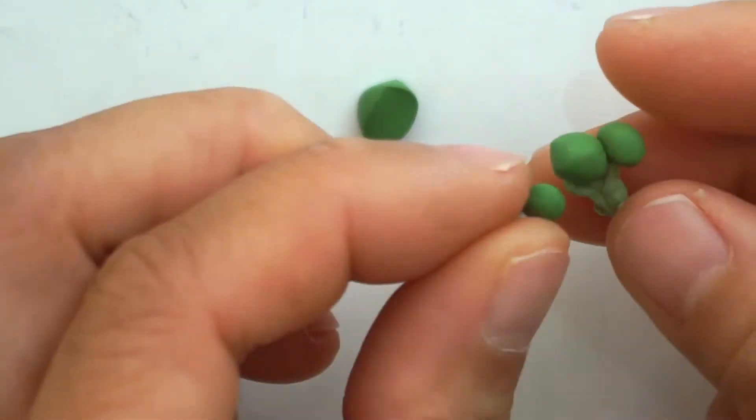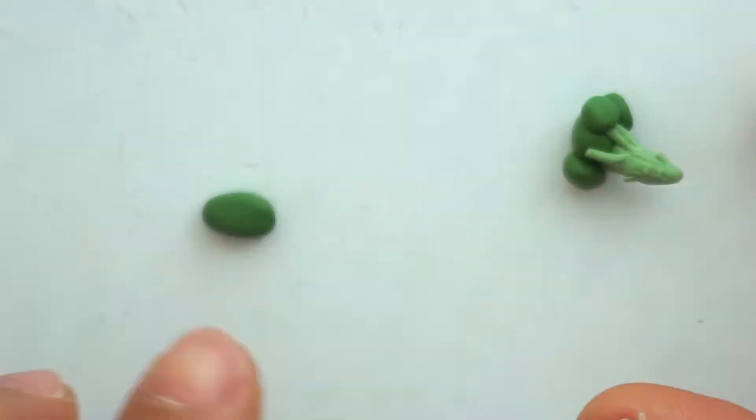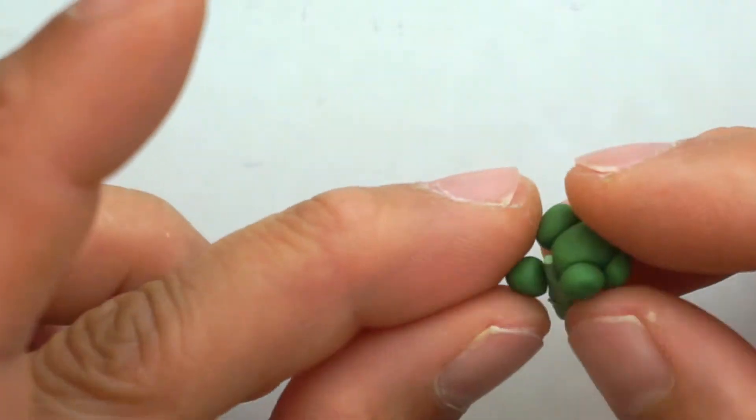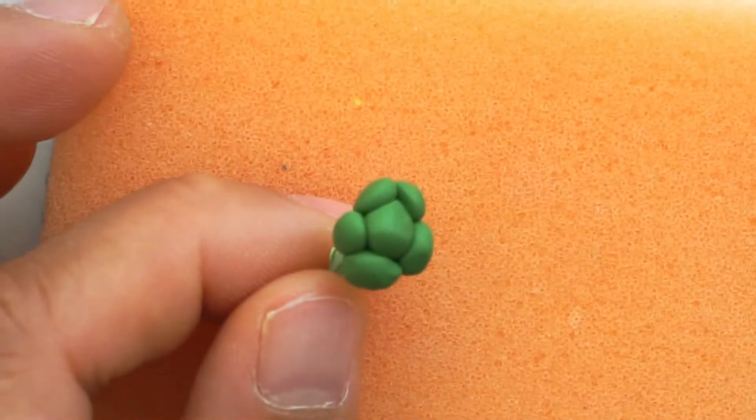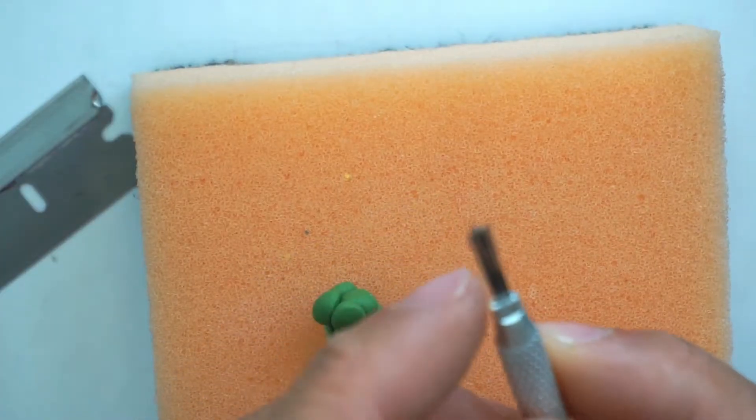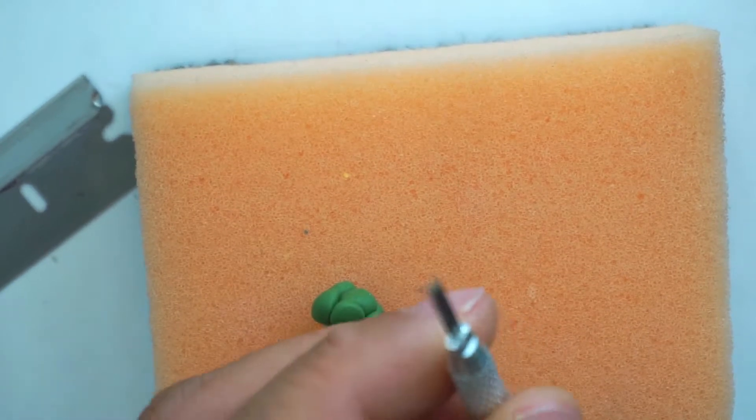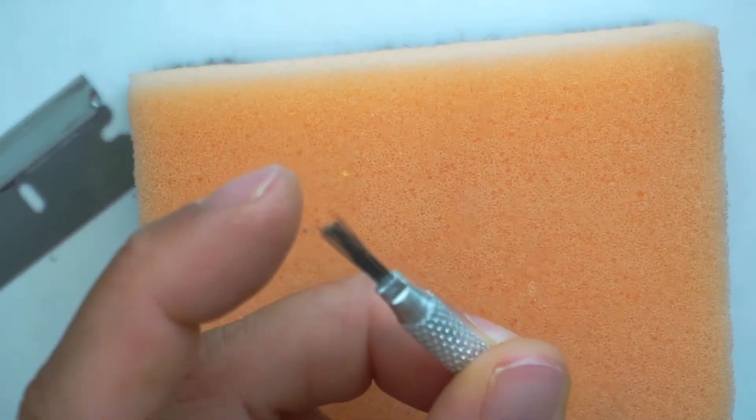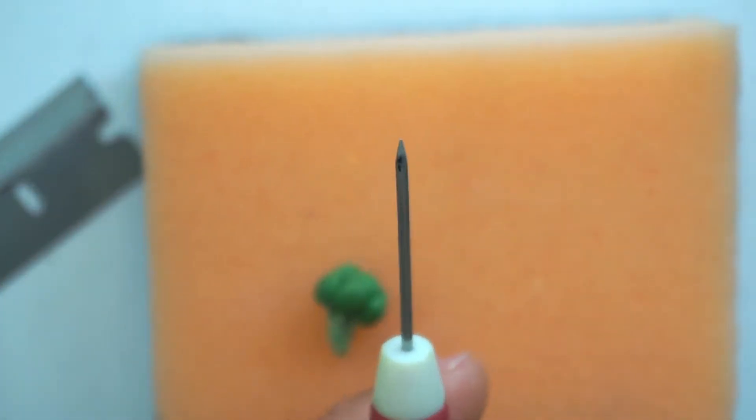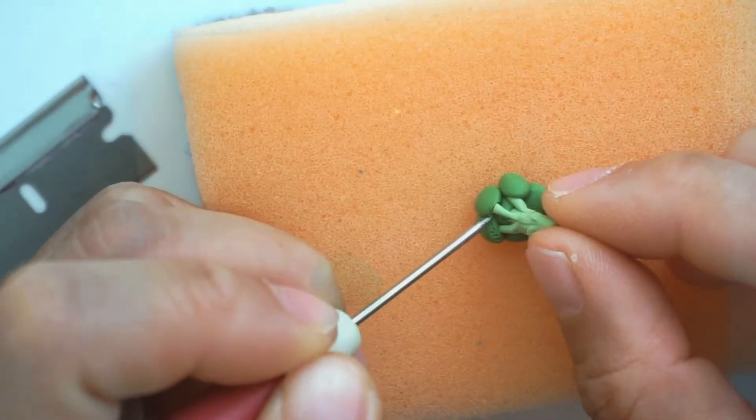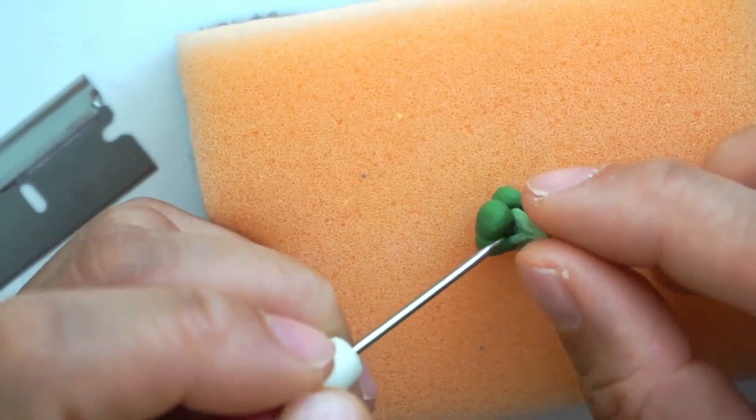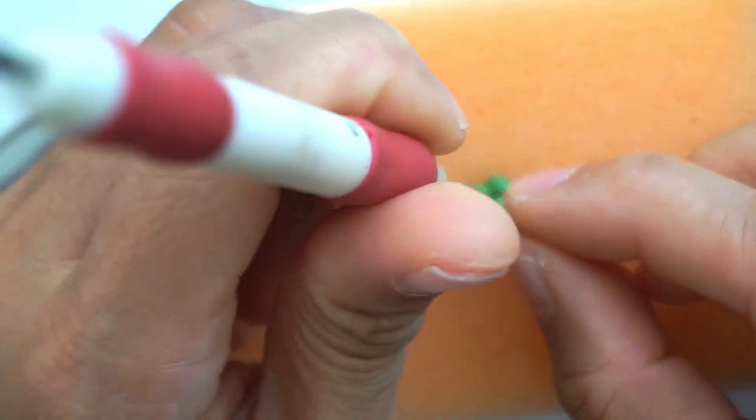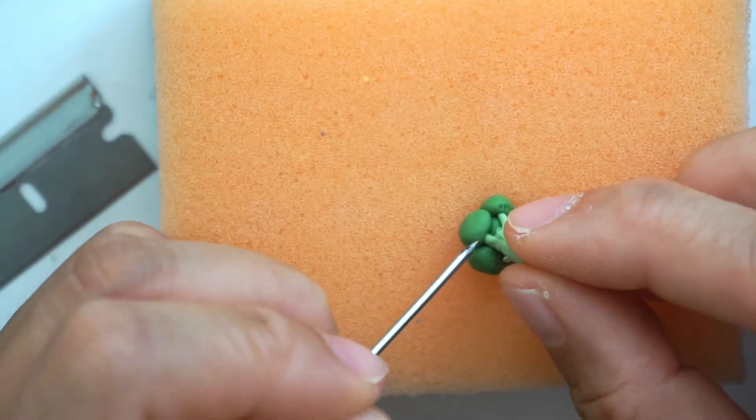Then place the biggest ball in the center, then surround the big ball with the smaller ones to create the broccoli florets. Use a needle tool or a cocktail stick to lightly poke the green. Here I am using a needle tool as well as feather wire texture brush. I started creating texture on the bottom part and working my way to the top.